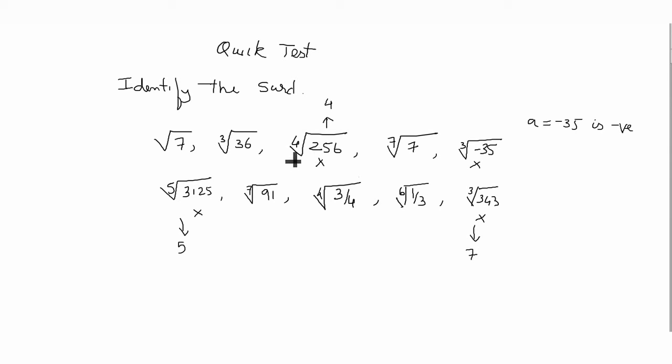If we see fourth root of 3 by 4, we can see 3 upon 4 is in the form of p by q, which is a rational number. And 1 by 3 can also be written as p by q, which is also a form of rational number. Hence these are surds.